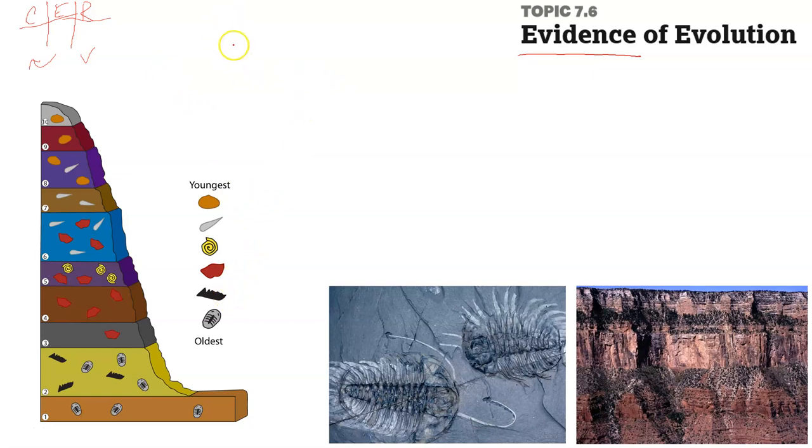So the first piece of evidence that I want to talk about when we talk about evidence for evolution is the fossil record. If you look down here, there's some fossils, there's some trilobites from a long time ago. I have a picture down here at the Grand Canyon where you can see these individual strata. These are geological layers, as you can kind of see in this cartoonish image here on the left. We have these different layers which have been laid down over time, in which we have at the bottom layer that occurred millions of years ago.